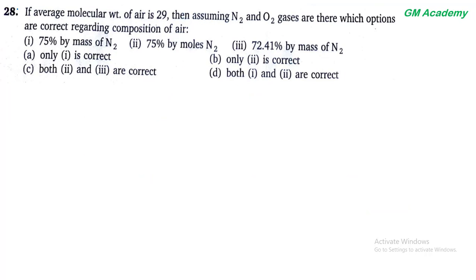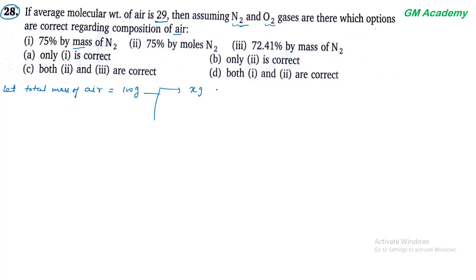Next question 28. If average molecular weight of air is 29, then assuming N₂ and O₂ gases are there, which options are correct regarding composition of air? Let total mass of air = 100 gram। इसमें X gram nitrogen है और 100 − X gram oxygen है।